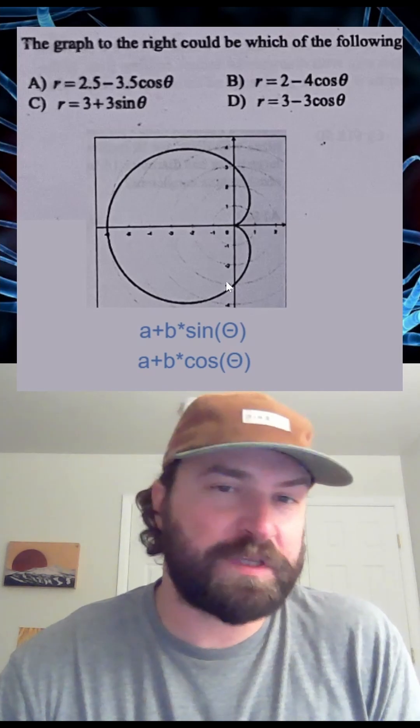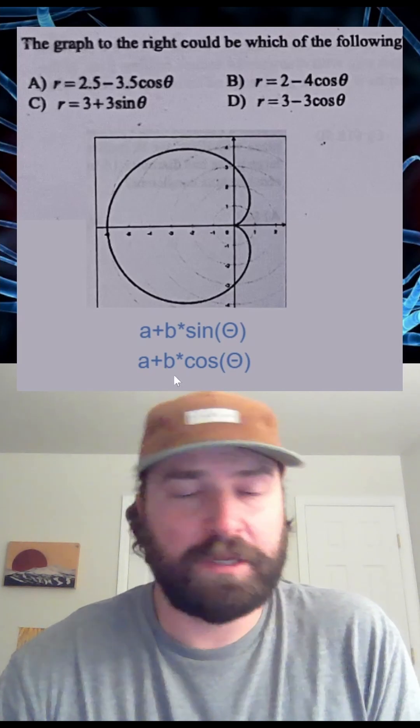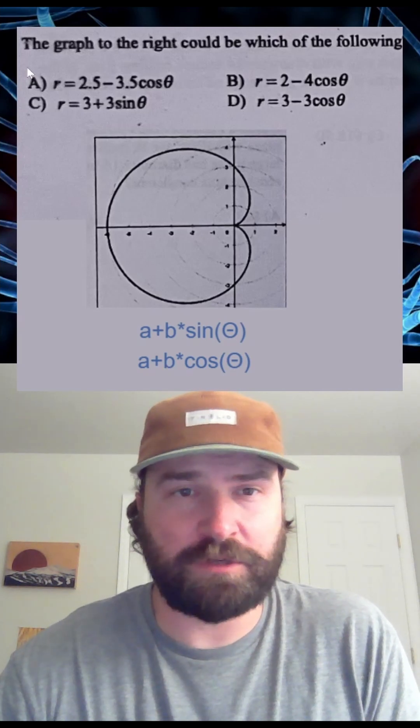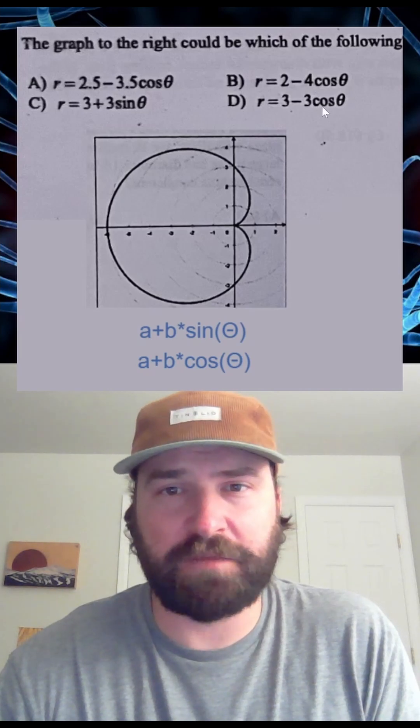Another feature of the graph is that this one is going to the left. We know that if a b value is negative, then it's going to the left. So at this point we can cross off answer c. We know this should be a negative cosine graph.